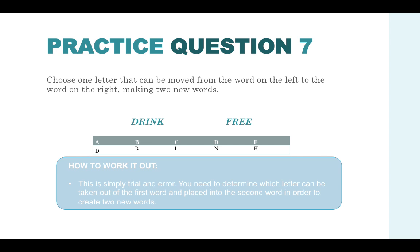This is simply trial and error, so you need to determine which letter can be taken out of the first word and placed into the second word in order to create two new words. In actual fact, the letter is D because if you take the D from the first word, you are left with rink. And if you move the D onto the word free, you get freed, which again is a new word.